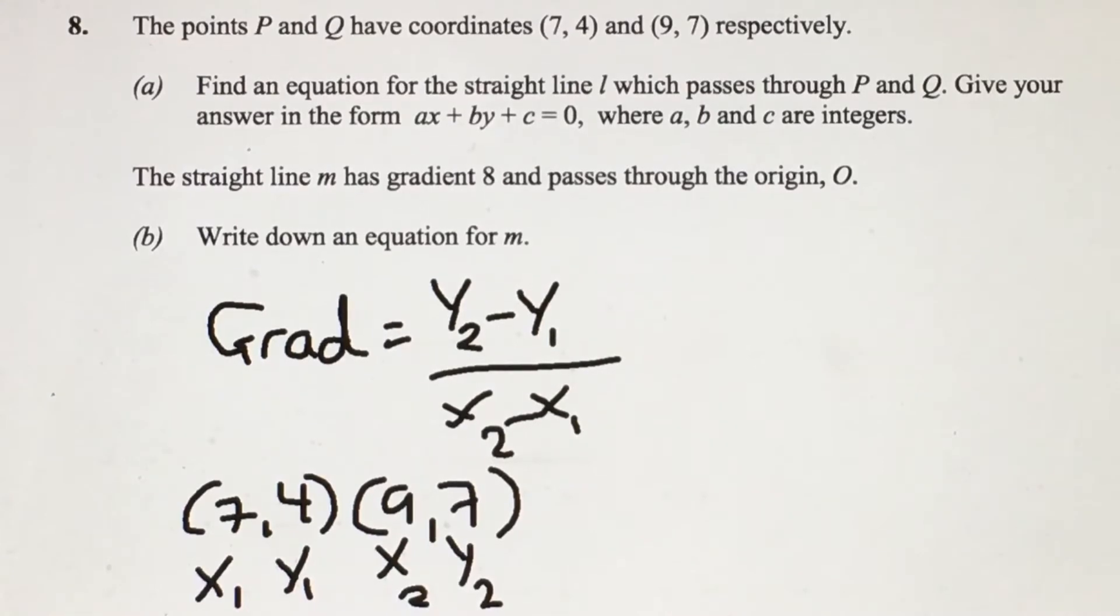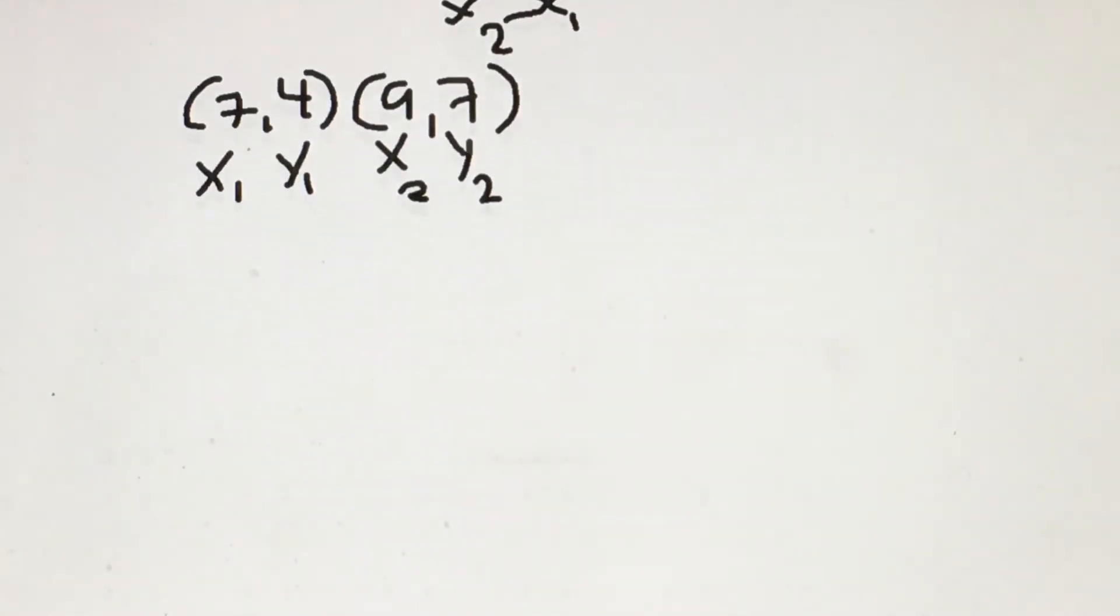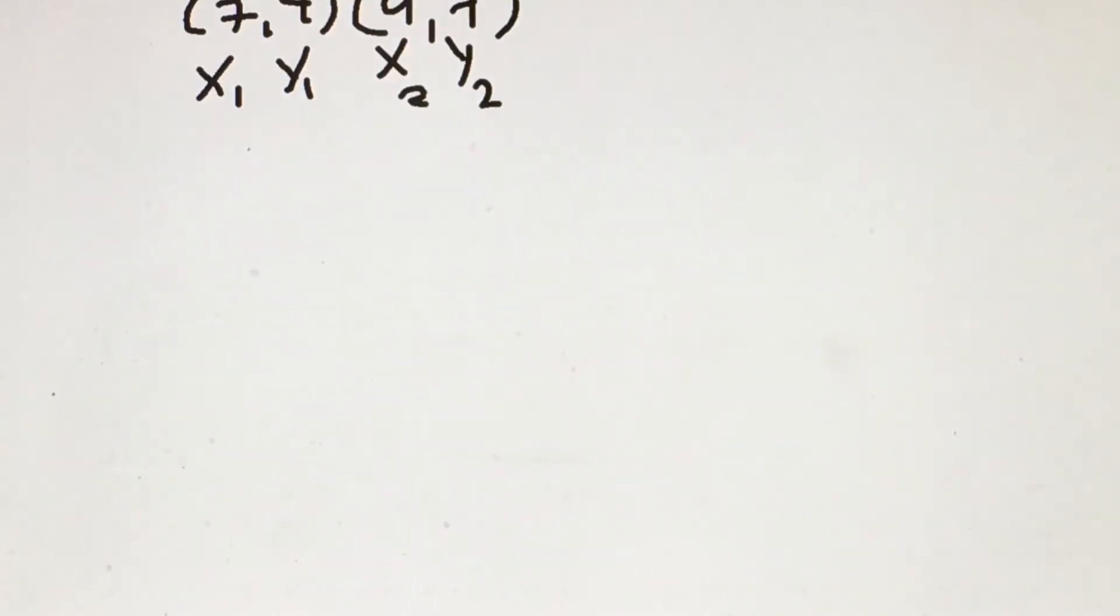I'm now going to substitute those values into the equation. So we have 7 minus 4 divided by 9 minus 7, which gives us 3 over 2. So the gradient is 3 over 2.